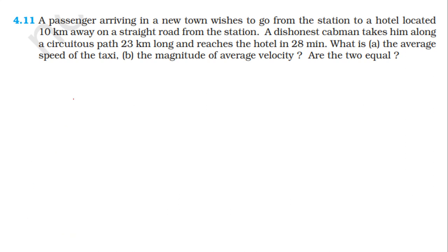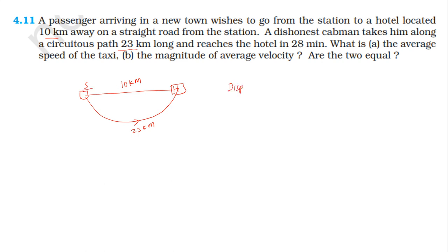The hotel is located 10 km away from the station on a straight road. So the shortest distance is the displacement — the displacement from the station to the hotel is 10 km. The distance is the total path traveled, which is 23 km.